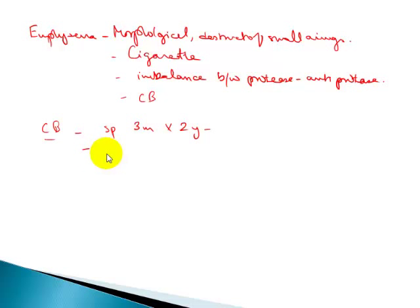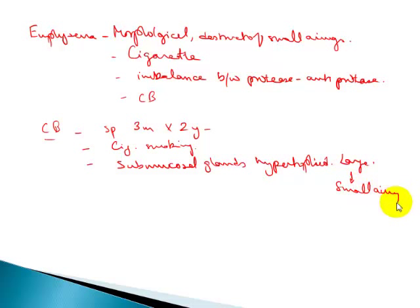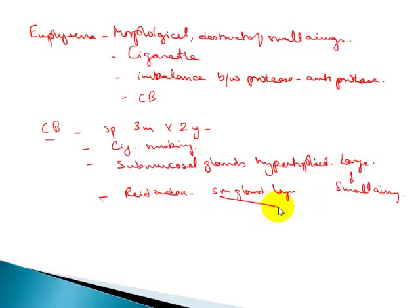Chronic bronchitis is diagnosed clinically when you have purulent sputum for at least three months for two consecutive years. Cigarette smoking is again important in its causation, leading to submucosal gland hypertrophy, mainly involving the large airways initially. The Reid index is the ratio of the submucosal gland layer to the wall of the bronchus, normally around 0.4.